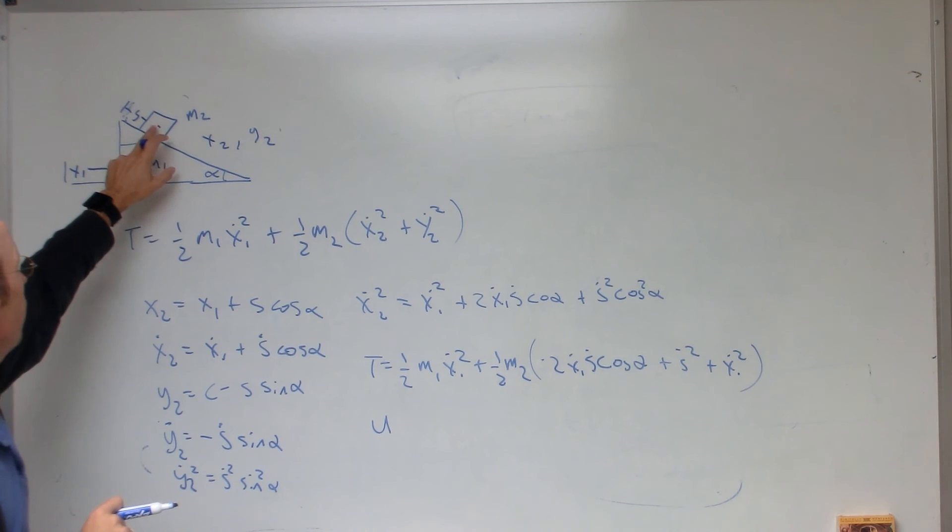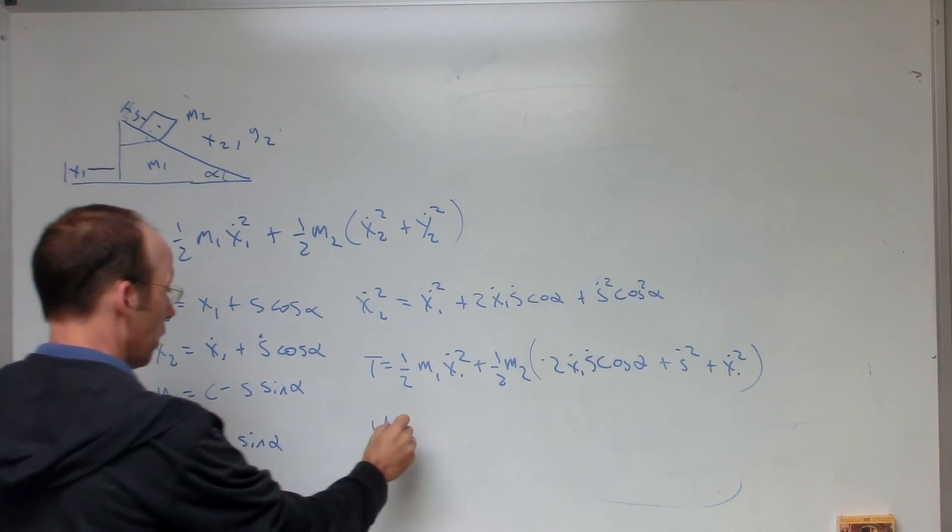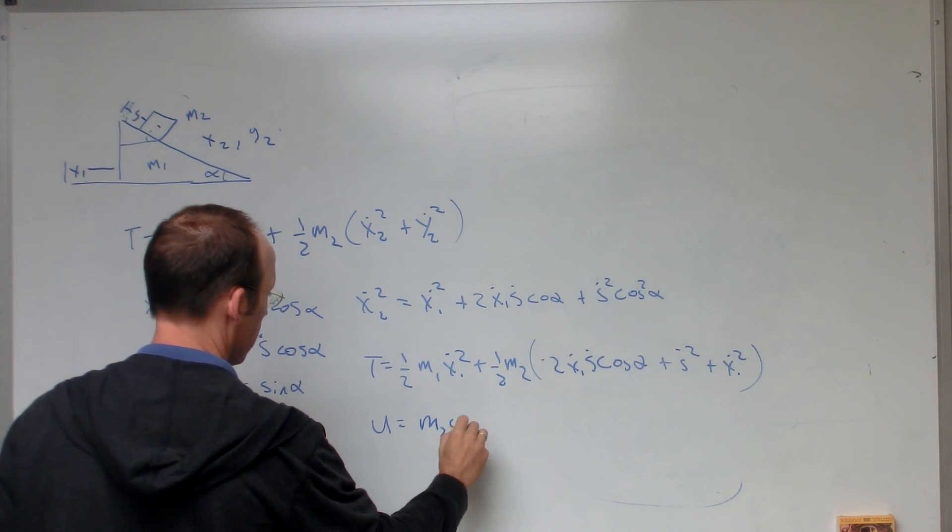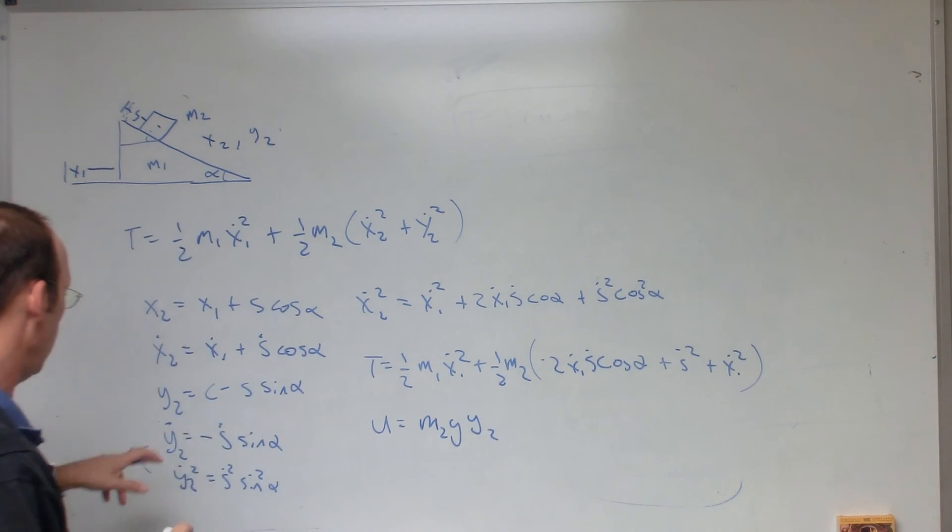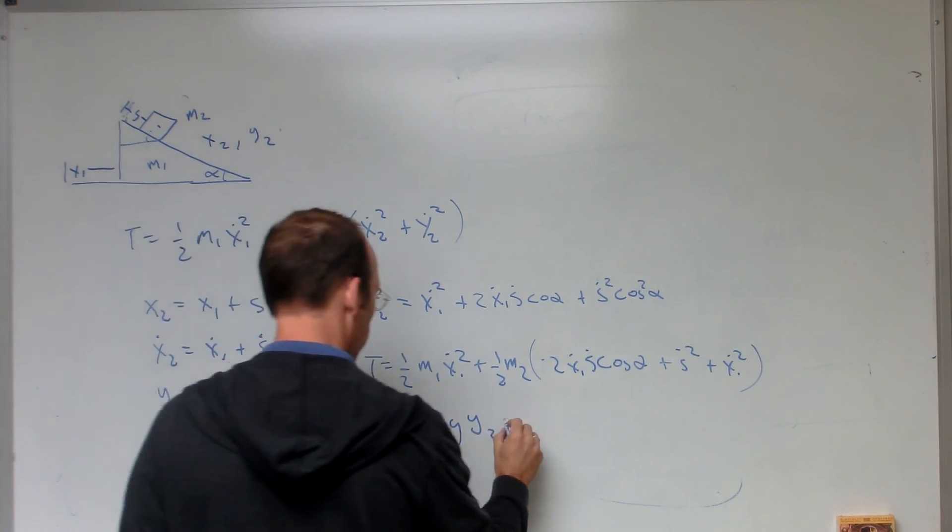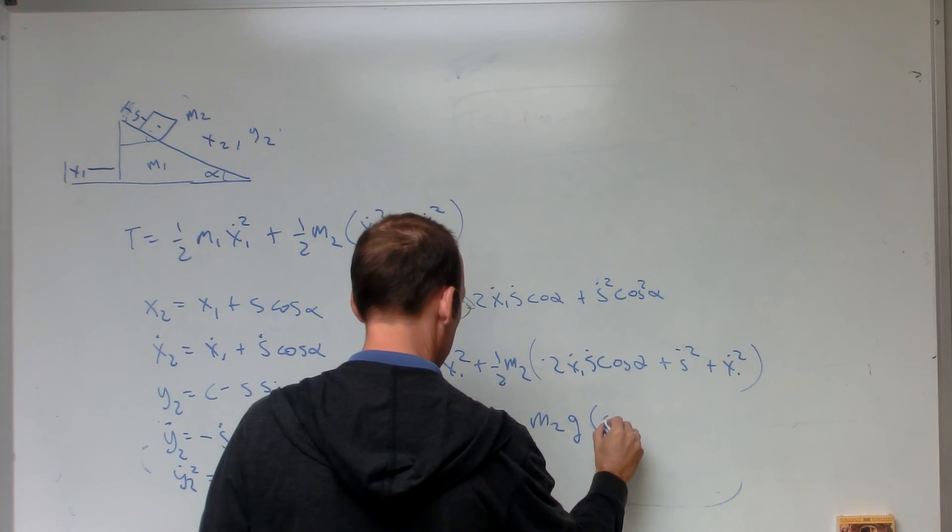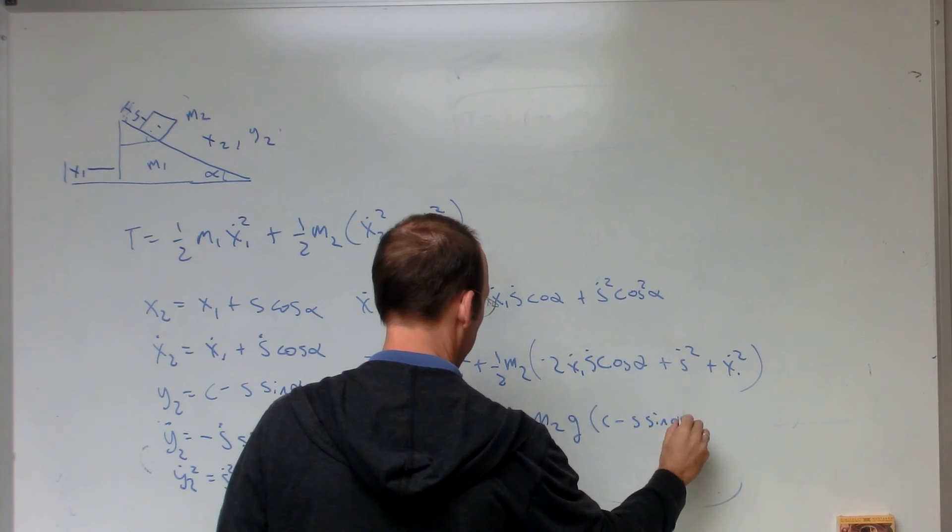and you get the same answer. This one is going to be just m2 g y2. So, it's going to be m2 g times c minus s sine alpha.